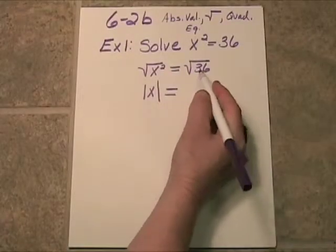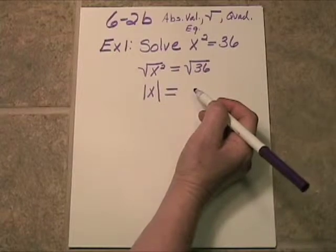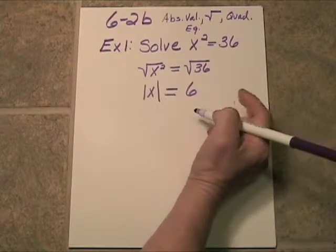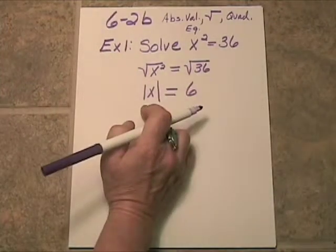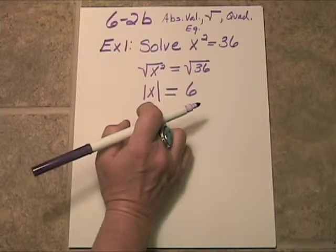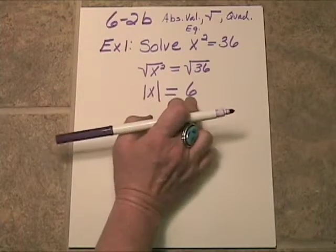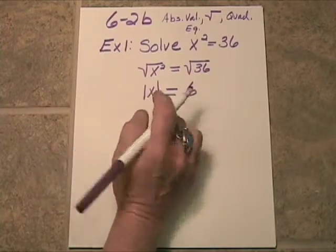Now, over here, the square root of 36 is going to be 6. Now, remember, the x in here, there are two possible options for this. If the absolute value of x is 6, there are two numbers that will do this.